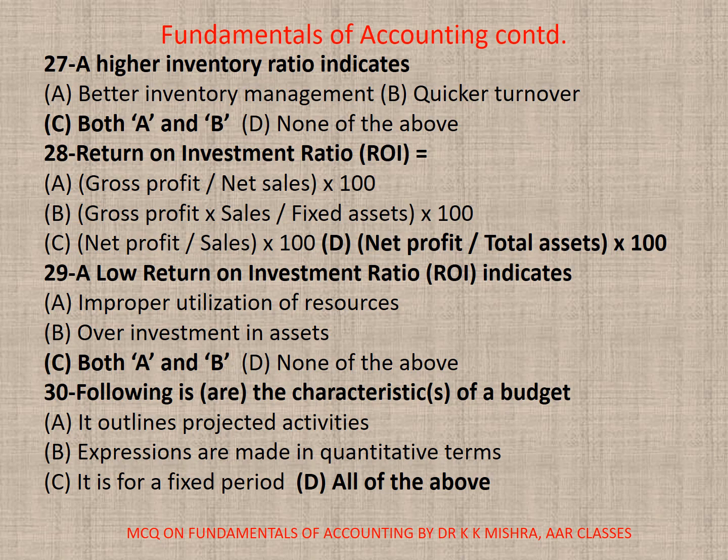Question 27: A higher inventory ratio indicates — A. Better inventory management, B. Quicker turnover, C. Both A and B, D. None. Correct option is C. Both A and B.